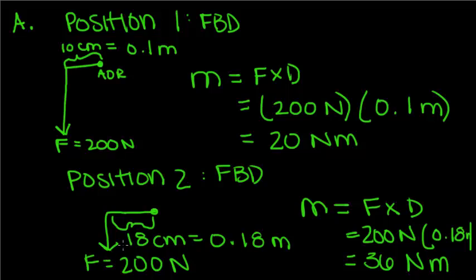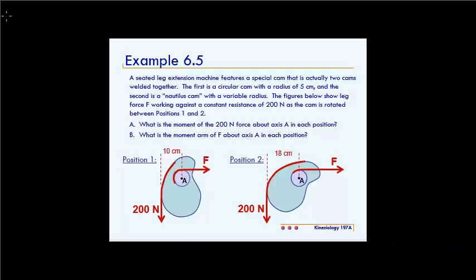Pay attention to the two distances, which are the two separate components of this part of the problem. The forces are the same, but the distances are different because the position changes that radius. Next, we're going to do part B, which asks: what is the moment arm of force about axis A in each position?